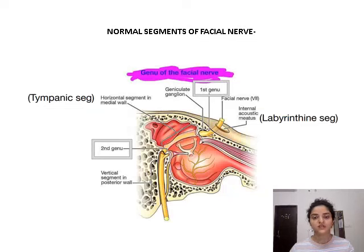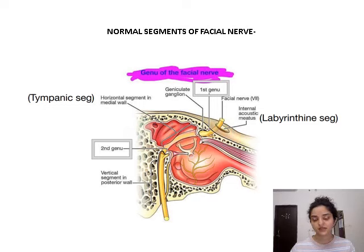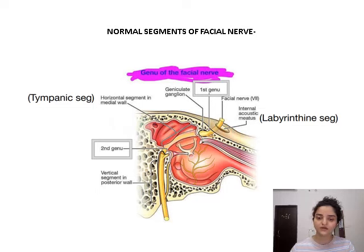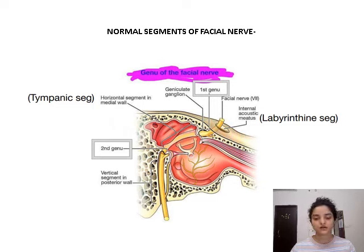Normal segments of facial nerve: The intratemporal segment of facial nerve has four segments. The labyrinthine segment extends from the fundus of the internal auditory canal to the geniculate ganglion. At the geniculate ganglion, the facial nerve takes its first genu to enter into the middle ear along its medial wall to form the horizontal or tympanic segment, where it takes the second genu to enter into the mastoid air cells, forming the vertical or mastoid segment of the facial nerve.